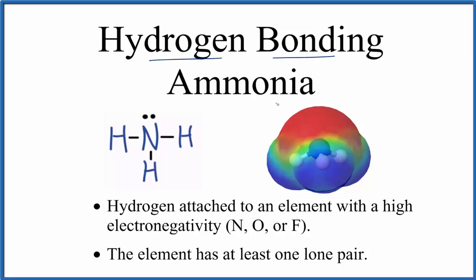Let's take a look at hydrogen bonding here for ammonia, NH3. So we'll start with the Lewis structure for ammonia. This is a Lewis structure for ammonia.